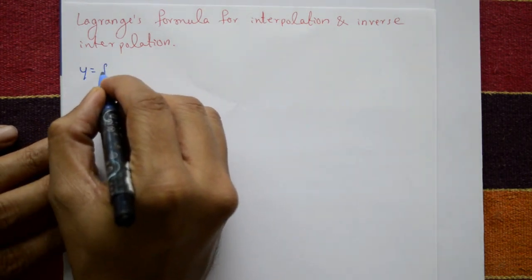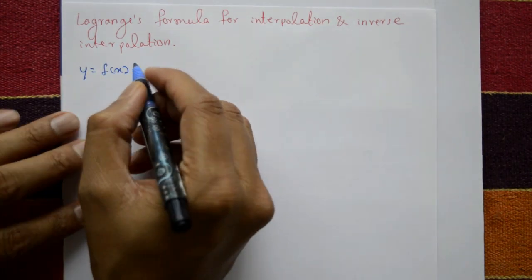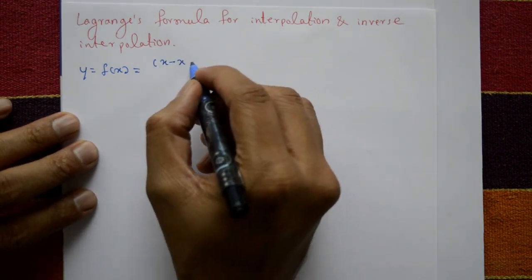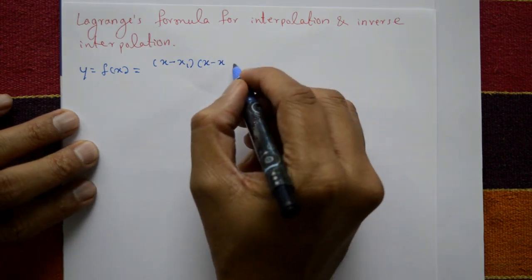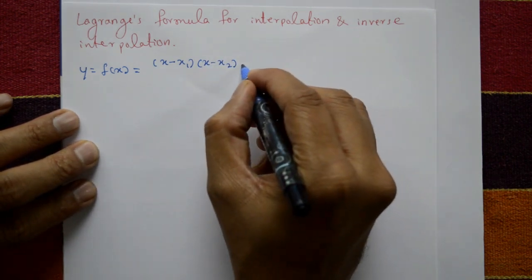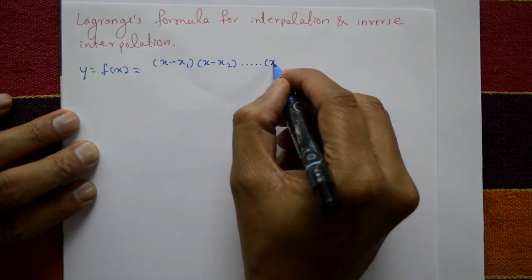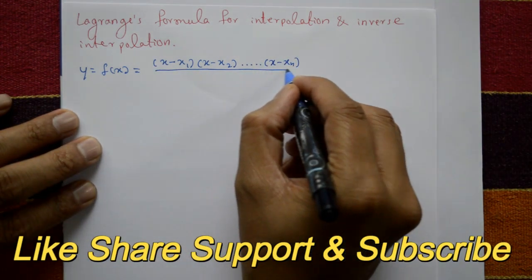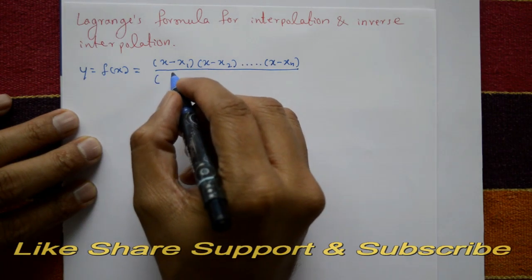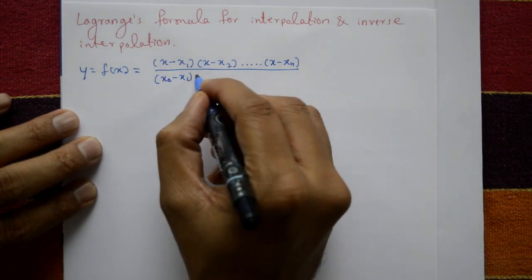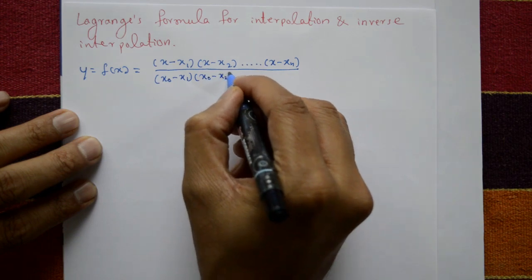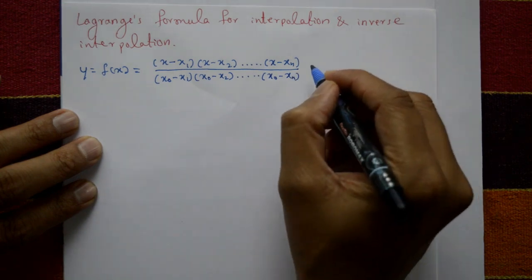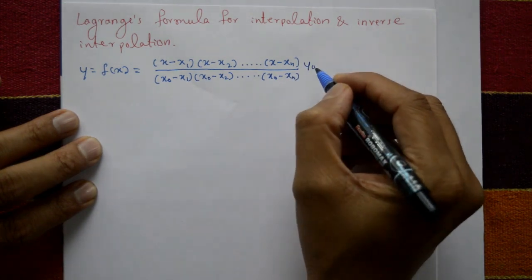The formula is y equals f of x. The first term in the numerator is x minus x1, into x minus x2, x minus x3, and so on up to x minus xn. This is divided by x naught minus x1, into x naught minus x2, x naught minus x3, and so on x naught minus xn, multiplied by y naught.